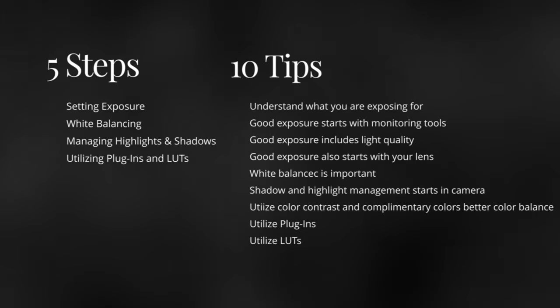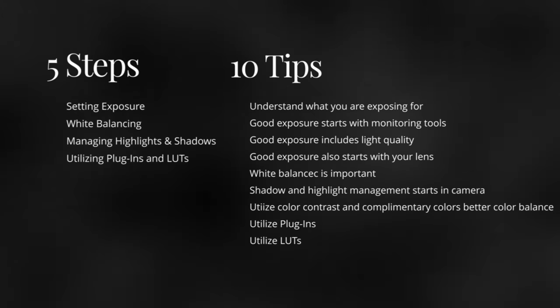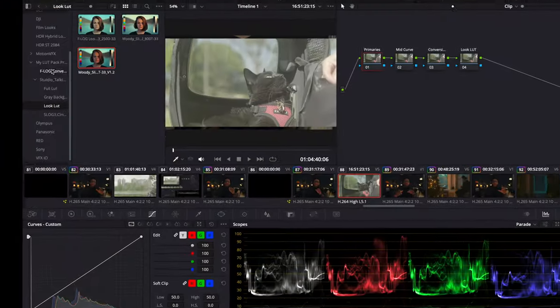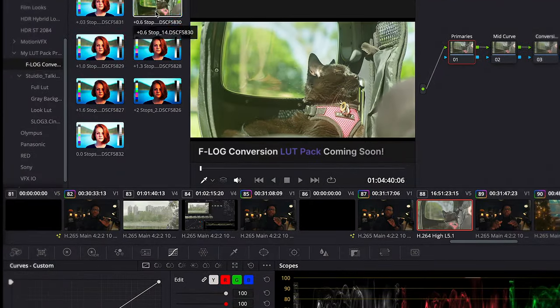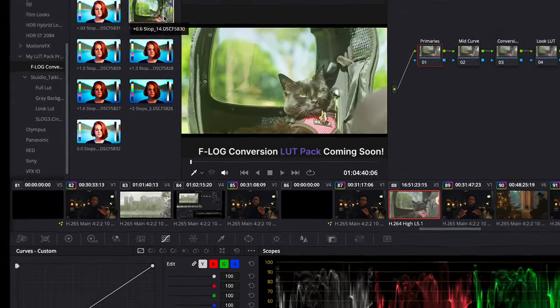Tip eight: LUTs. LUTs are basically filters you can apply to your footage to convert it from log to Rec. 709 and to create a stylized look. You have three basic LUTs: a technical LUT, a creative LUT, and a LUT that combines both technical and creative. To decide what you want to use, you have to determine how much control you want to have over your color management and grading.